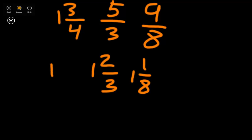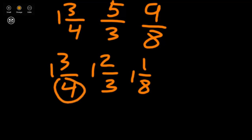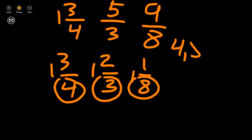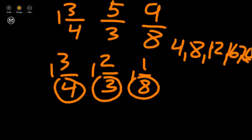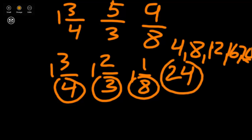We have to now find a common denominator to make our fractions easier to compare. Our 3 denominators are 4, 3, and 8. We can multiply those 3 numbers together to get a common denominator, or we can list multiples of each number. Let's start with 4: multiples of 4 are 4, 8, 12, 16, 20, and 24. I notice right away that 24 is a multiple of 3 and 8 as well, so I'm going to use 24.